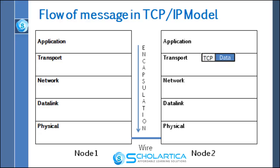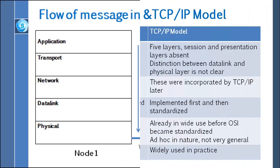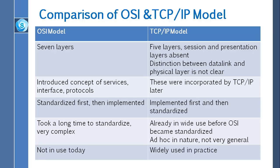Now let us compare these two models. The OSI model has seven layers, whereas the TCP/IP model has fewer layers. In the TCP/IP model, the session and presentation layers are absent; those issues are handled by the application layer. The distinction between data link and physical layers is not very clear in TCP/IP — it combines them into what is known as the network access layer. The OSI model introduced the concepts of services, interfaces, and protocols.